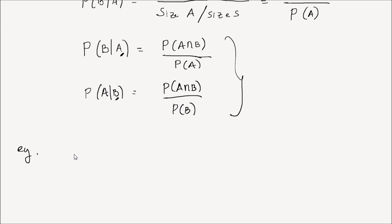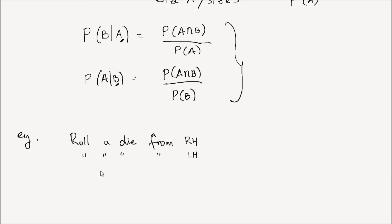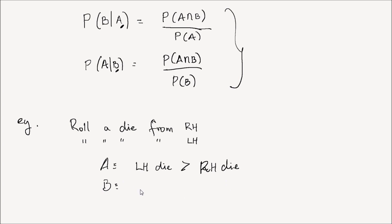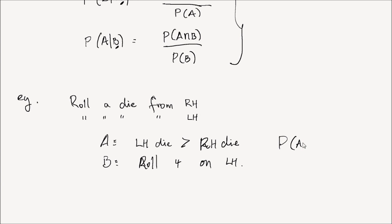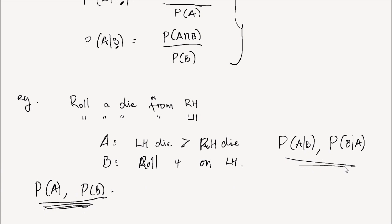Let's do an example. Suppose we do an experiment of rolling two dice, one from our left hand and one from our right hand — a six-sided die from each. Define event A as the event of rolling a higher value on your left hand than on your right hand. Define event B as the event of rolling a number four on the left hand. The goal is to find P(A|B) and P(B|A). Let's also find P(A) and P(B) first.